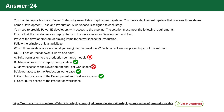Option F: Contributor access to the production workspace. This violates the principle of least privilege by allowing developers to make changes in the production environment. Therefore, it is incorrect.